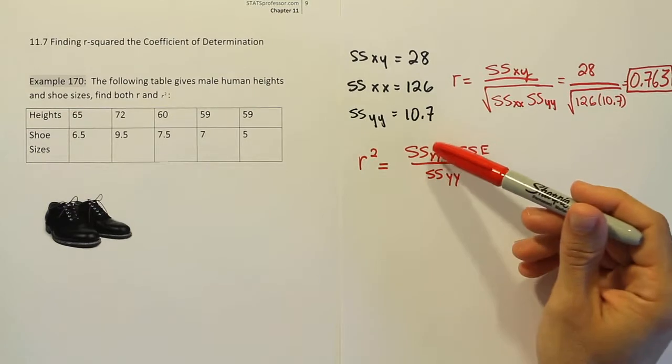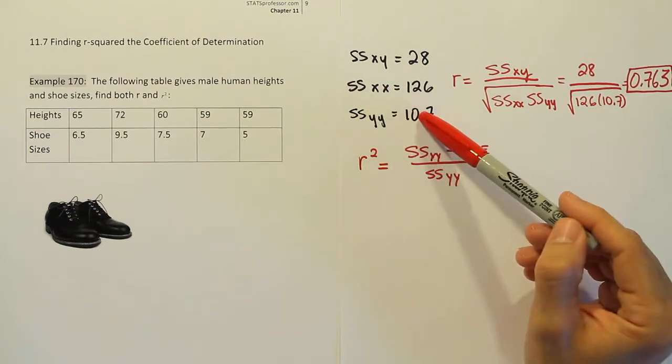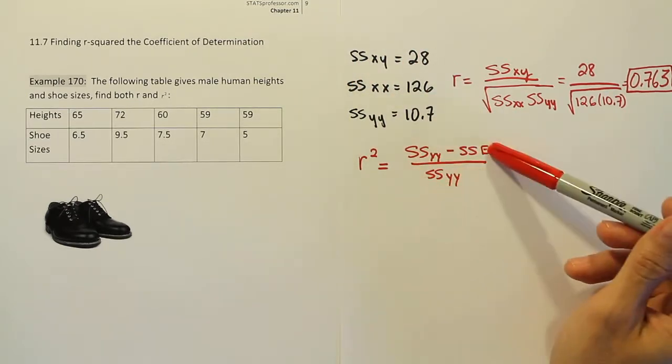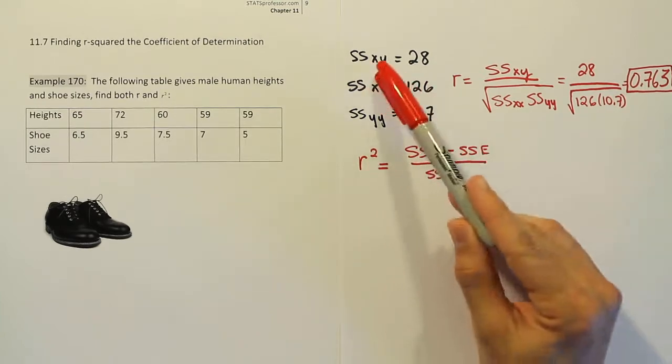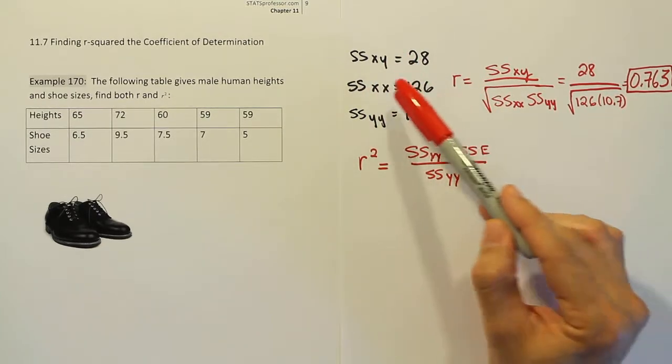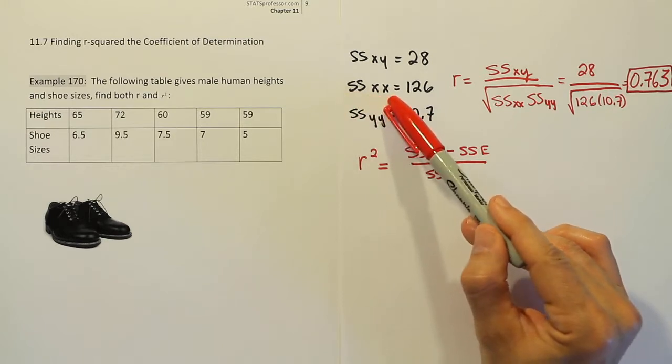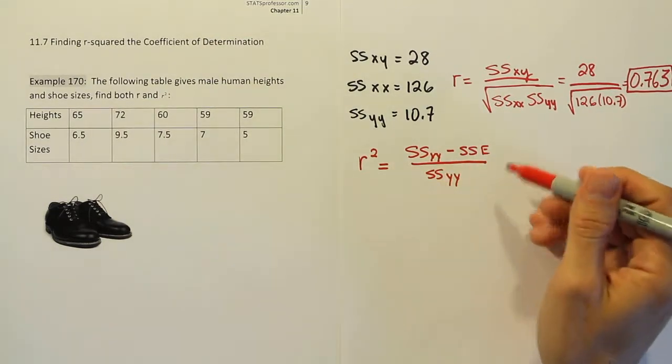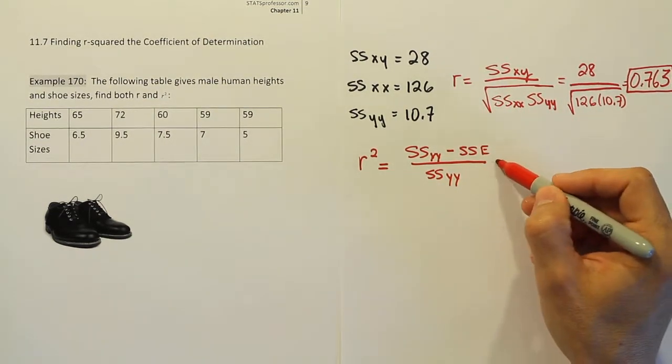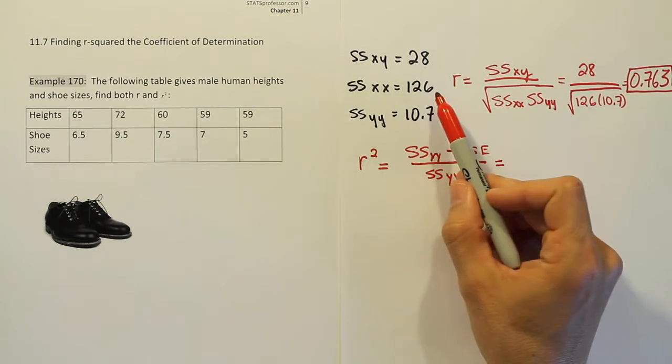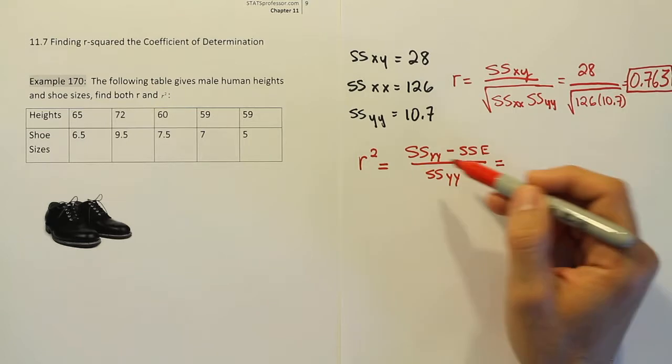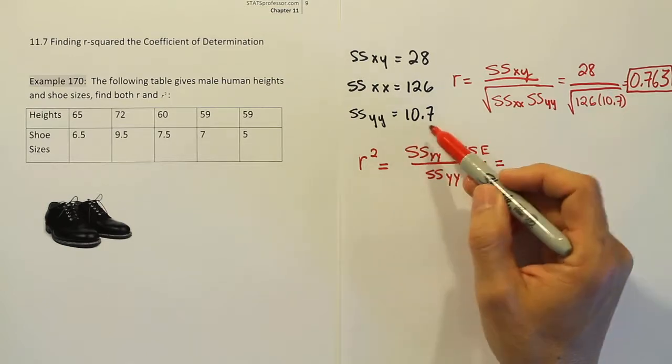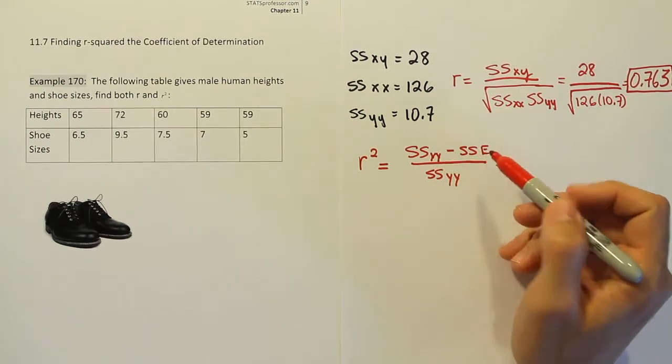Now as I mentioned, you could be given ssyy and you could be given the mixed term ssxy, and that would be enough for you to fill in this formula. So at that point, they'd have to also give you the slope, but the point is that you wouldn't necessarily have to be given this ssxx value, which would then prevent you from forming r. That's why I mentioned you want to know this formula. In this particular case, we could have just squared the r, but without the ssxx, if that was hidden from us and they instead gave us the slope, they would force us to use this formula. So it's better to know how to do it both ways. With this formula, we have ssyy, so that's easy. The question is, how do you get this sse thing?